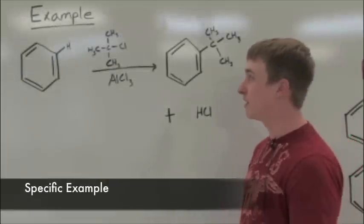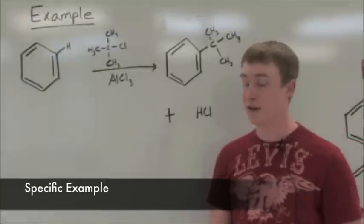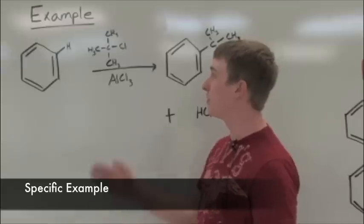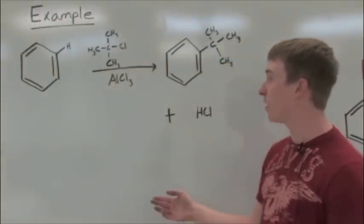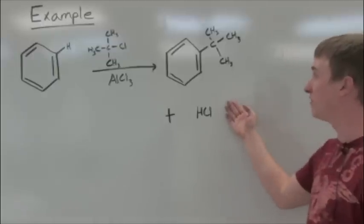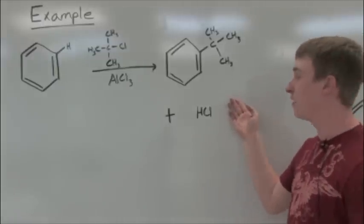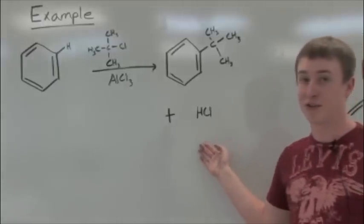Now I'll be talking about a specific example of a Friedel-Crafts alkylation. Beginning with benzene, one could treat it with tert-butyl chloride and aluminum trichloride to yield a substituted benzene compound, specifically tert-butyl benzene with a byproduct of hydrogen chloride.